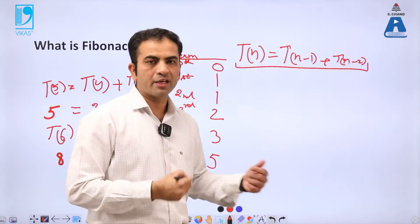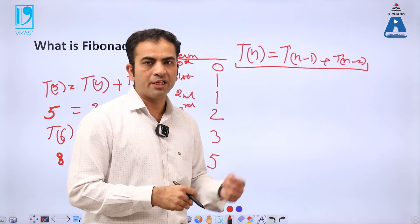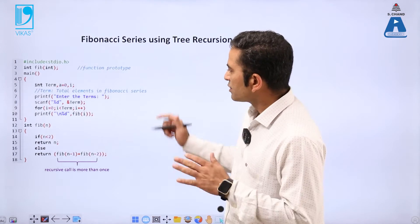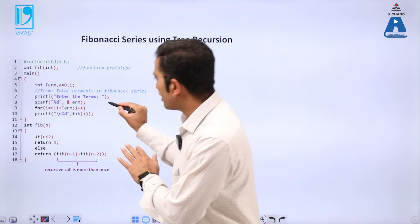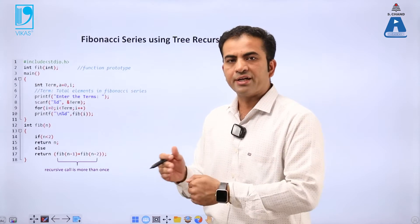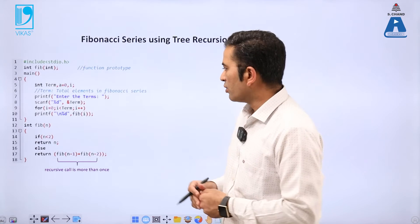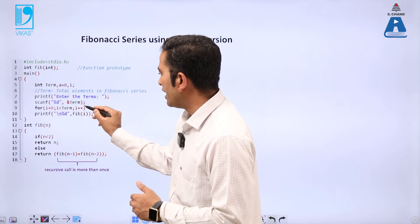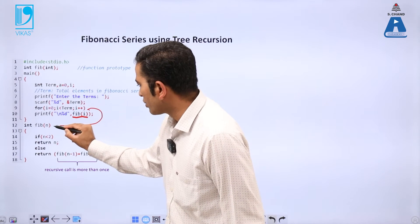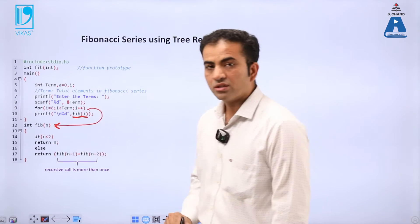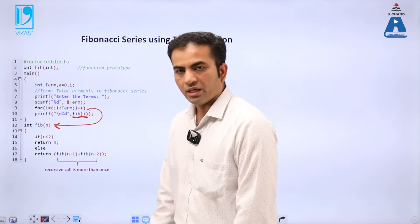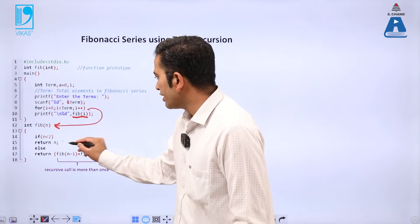We will now implement this Fibonacci concept using recursion. Here is a program for the Fibonacci series using tree recursion. There is a variable 'term' for how many terms you want — if you enter 6 terms the output goes up to 8. The for loop runs: for i equal to zero, i less than term, i plus plus, and calls the Fib function. When the Fib function is called with value i, initially i is zero. Inside the function, if n is less than 2, we return n.